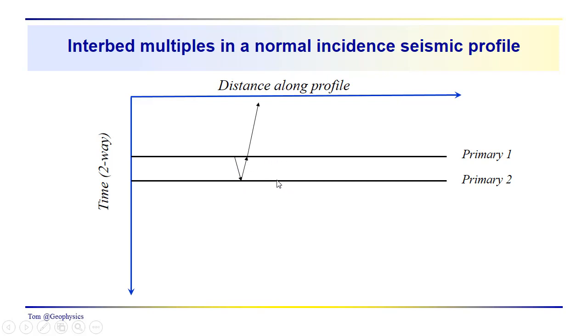depending on the value of the reflection coefficients here, across the top and the bottom, we could get an additional reflection across the top, down to the bottom, back up again to the surface. We could see that as a first order multiple, interbed multiple.